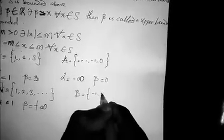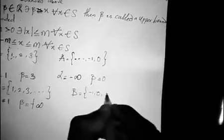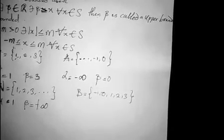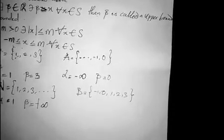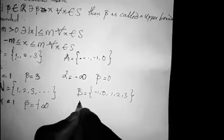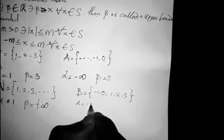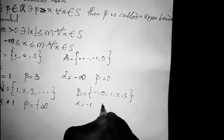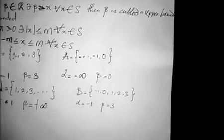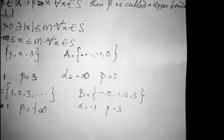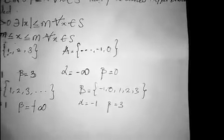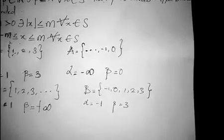What would be the answer for this: let's say I have B equals {-1, 0, 1, 2, 3}. Is this set bounded? Very clearly it is bounded, because it has a lower bound of minus one and an upper bound of 3.